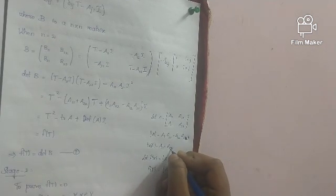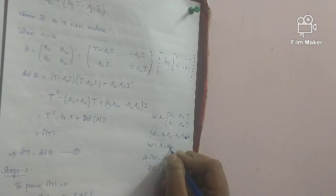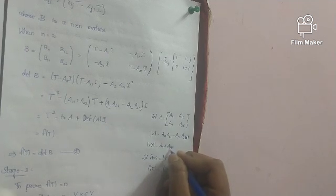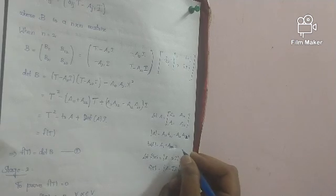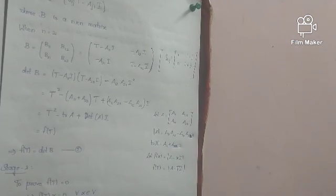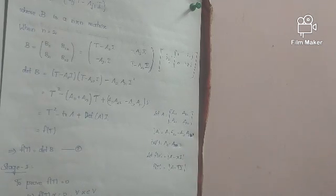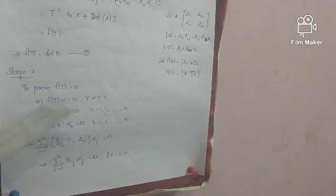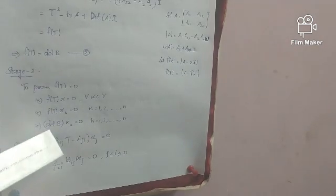Now let's prove that F of T equals det(B). F of T times det(B) equals zero, and then F of T is zero. Alpha is zero — alpha is one characteristic vector. So F of T is zero. The summation of j from 1 to N: delta-ij times T of a-ji equals 0.